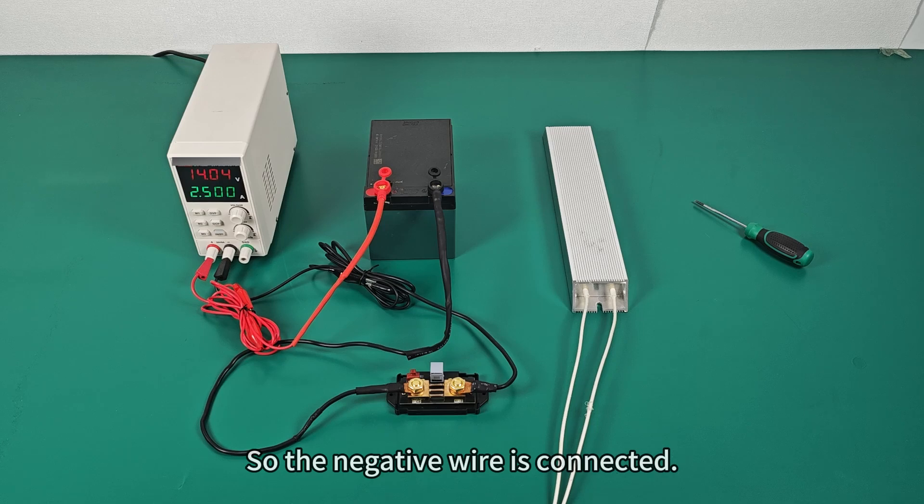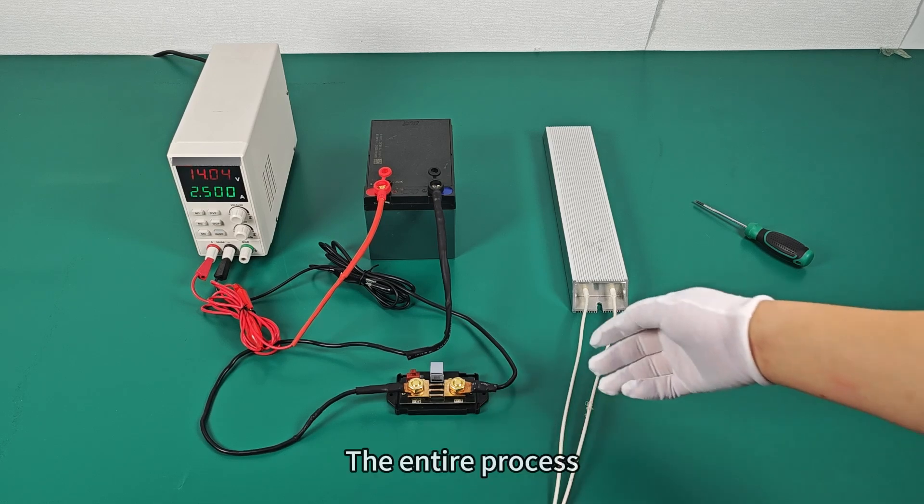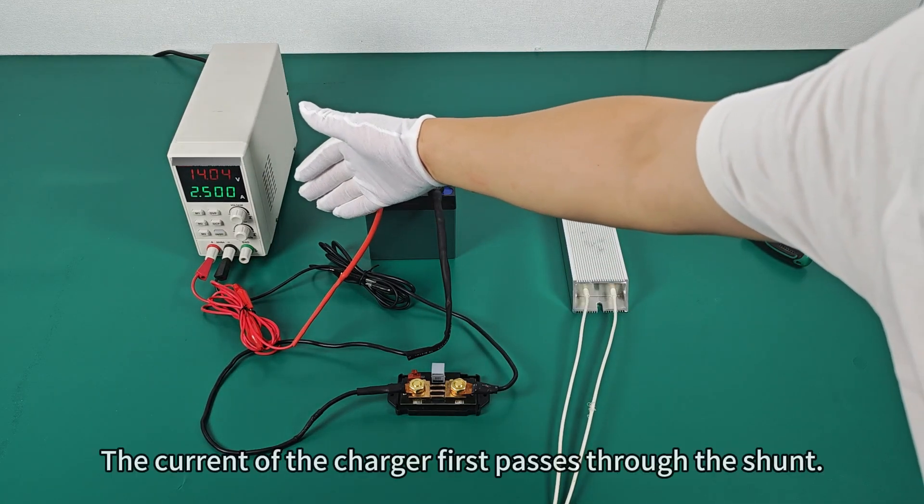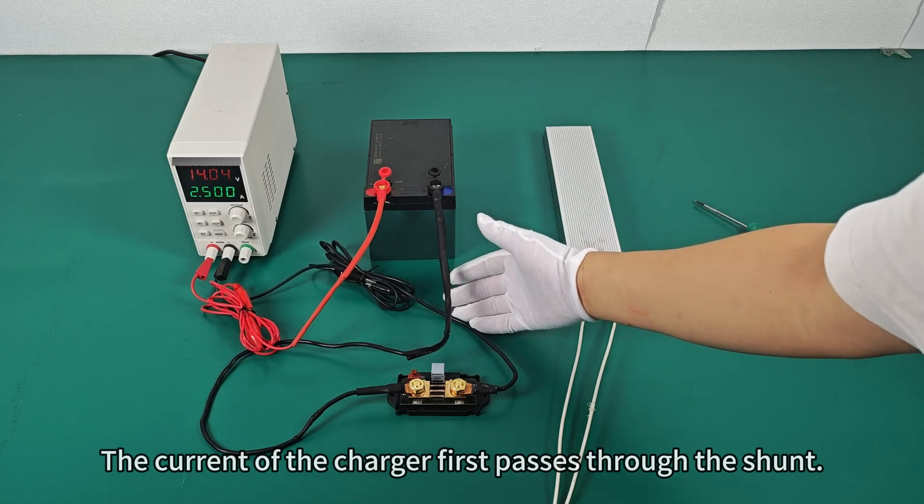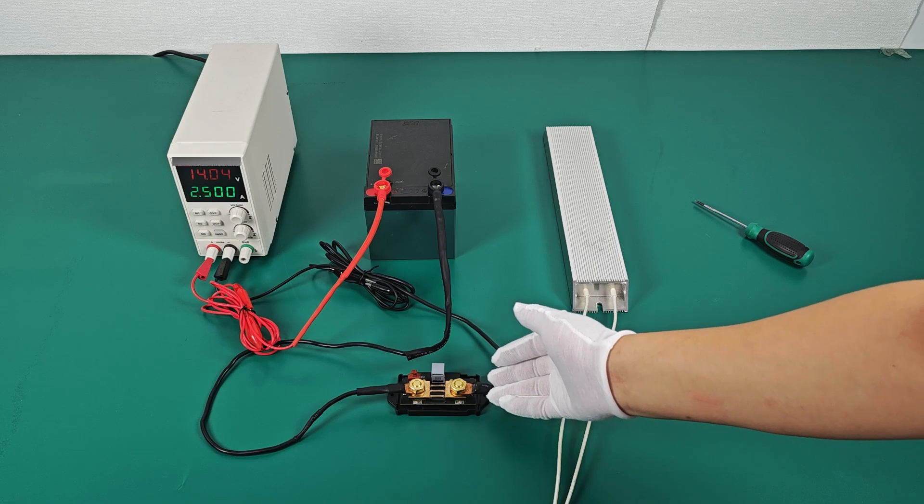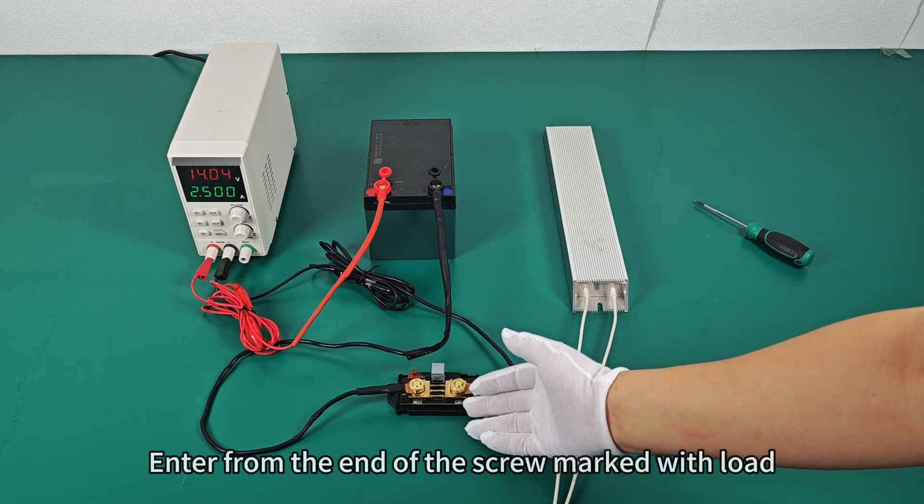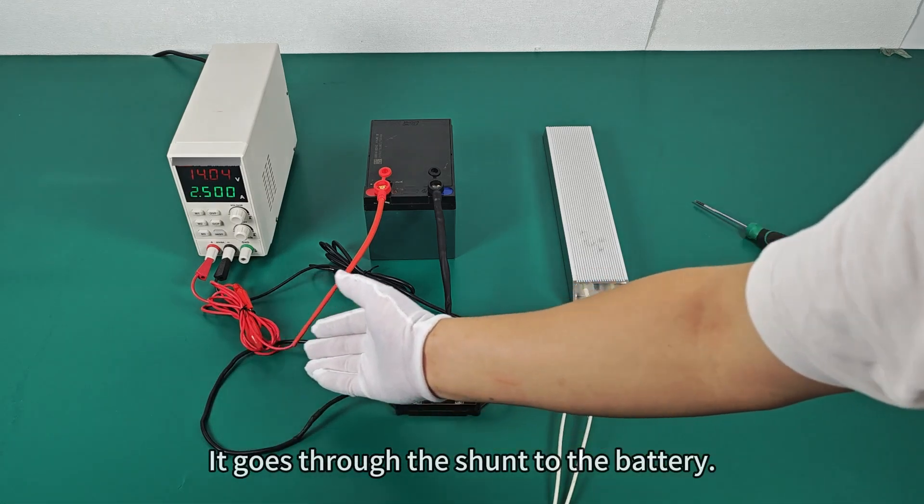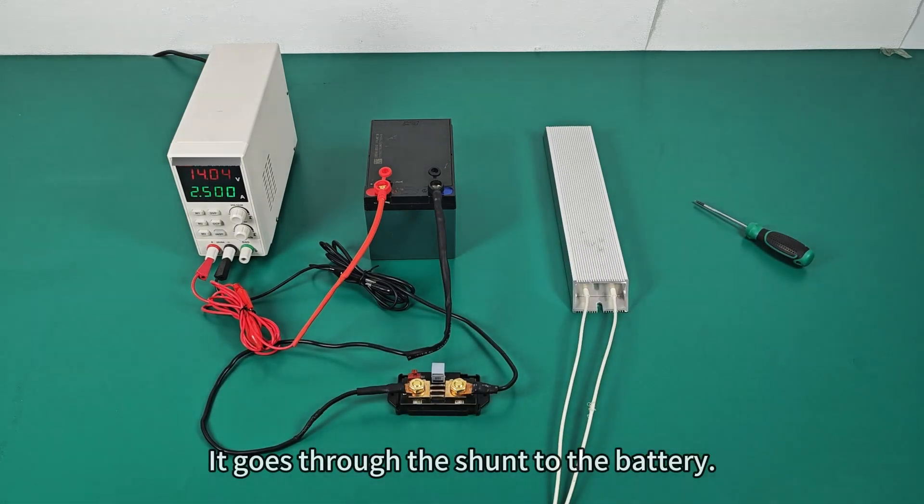So the negative wire is connected. The entire process: The current of the charger first passes through the shunt. Enter from the end of the screw marked with load. It goes through the shunt to the battery. Therefore, it is possible to monitor the current throughout the charging process.